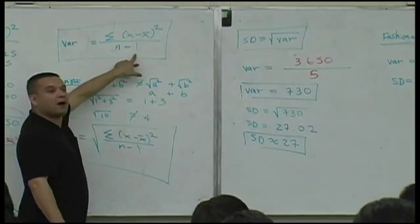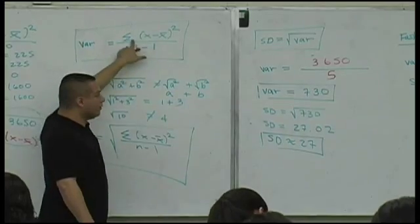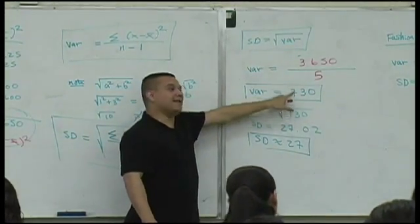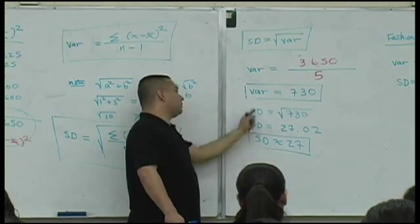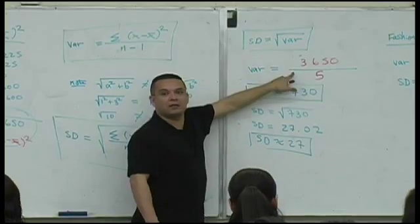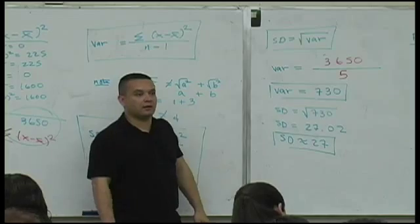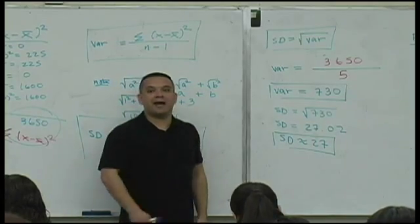N minus 1 is 5, 6 minus 1 is 5. Do the division and then take the square root and you get the standard deviation. But when you do the division, that's called the what? Variance. I'll give you a few minutes to do that.